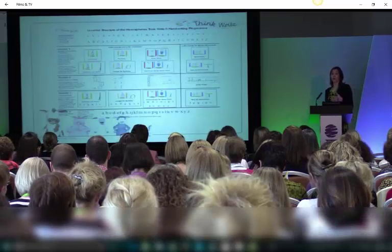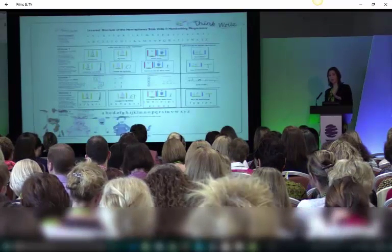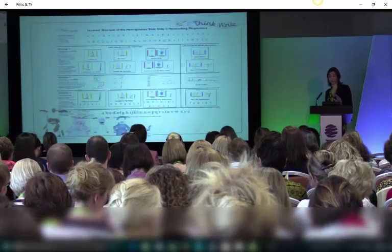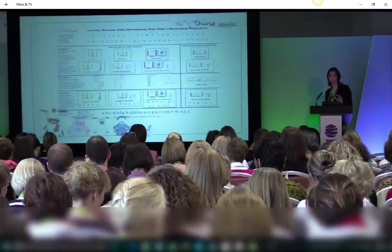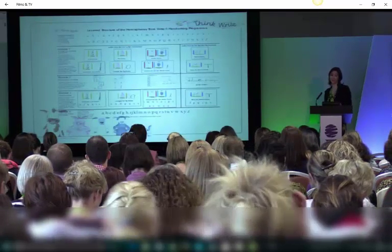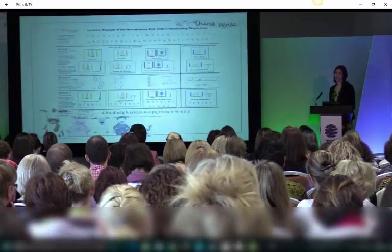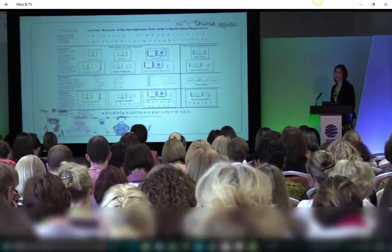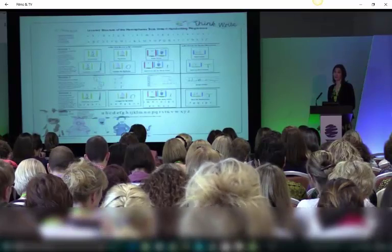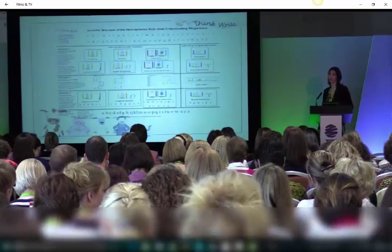Module 4 is learning to join them together. So we would expect children to have gone through at least Module 2 and into Module 3 and into Module 4 by the beginning of Year 2. And in some of the instances, many of the children are joining in Year 1, if not before.